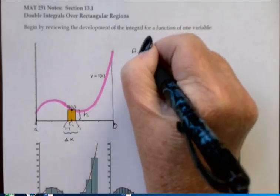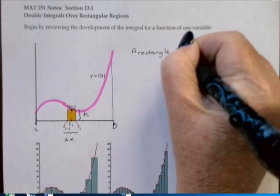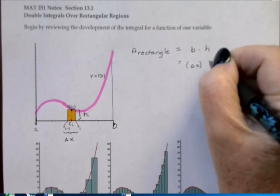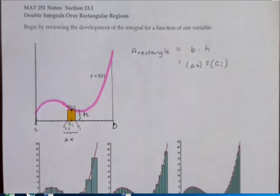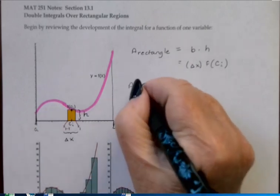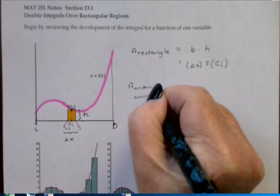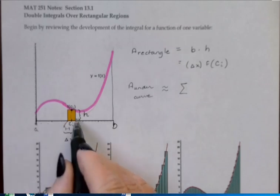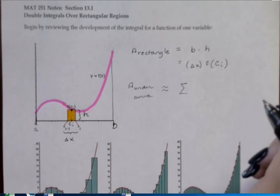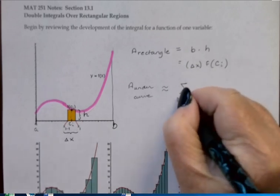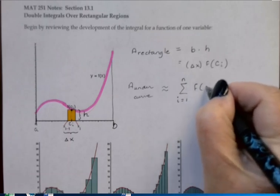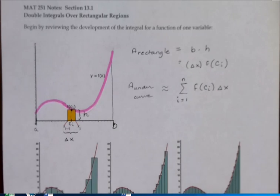The area of our single rectangle, base times height, was our base delta x times our height f of c sub i, the y value on the curve. We then said we can approximate the complete area under the curve from a to b by adding up a whole bunch of little rectangles. So if we subdivide it into n rectangles and let our i values go from 1 to n, the area of each rectangle is f of c sub i times delta x.